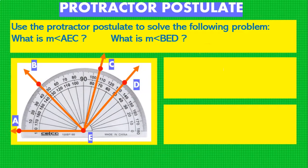So the problem here says use the protractor postulate to solve the following problem. What is the measure of angle AEC, which is this angle right here, and what is the measurement of angle BED, which is this angle right here. First let's try doing AEC.